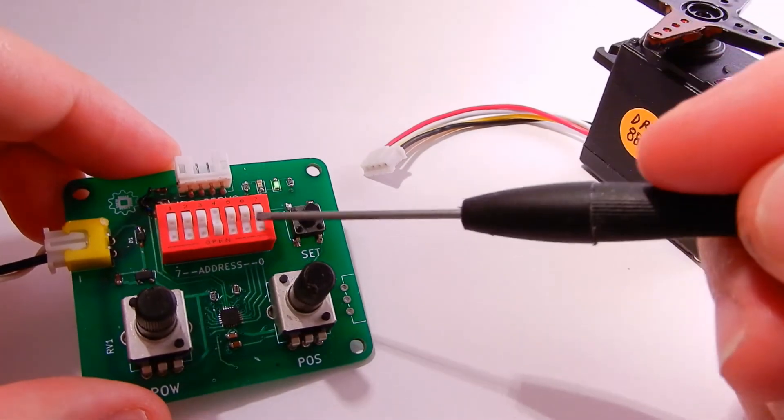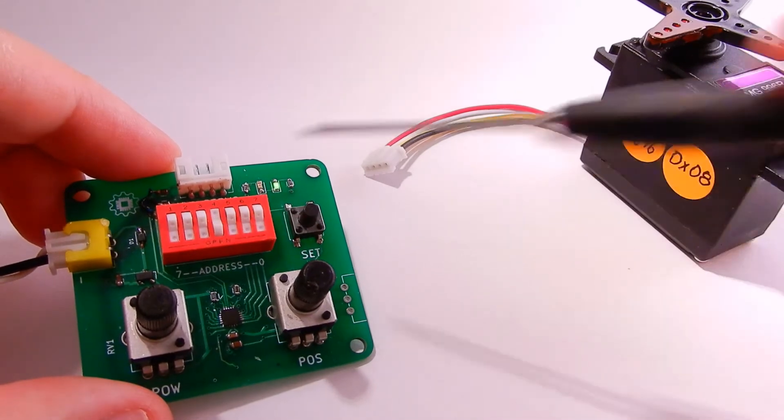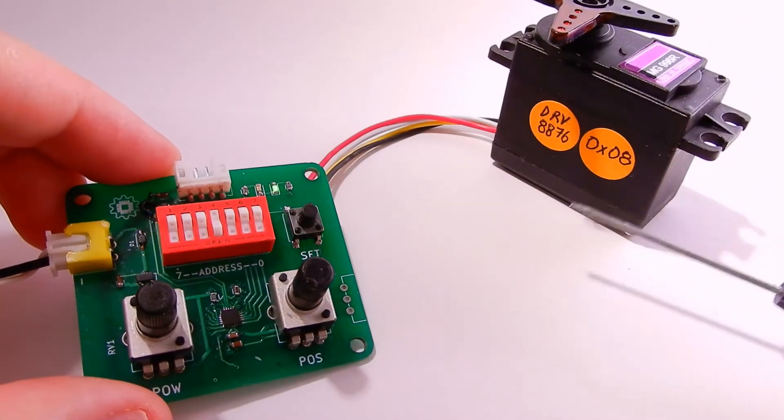As before we'll use our i2c servo tester for this. In this example we'll set the address to 08 hex to illustrate the pattern.